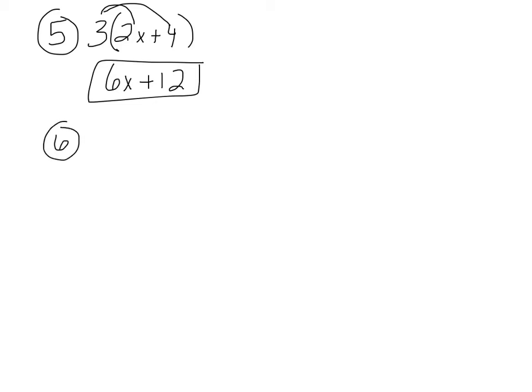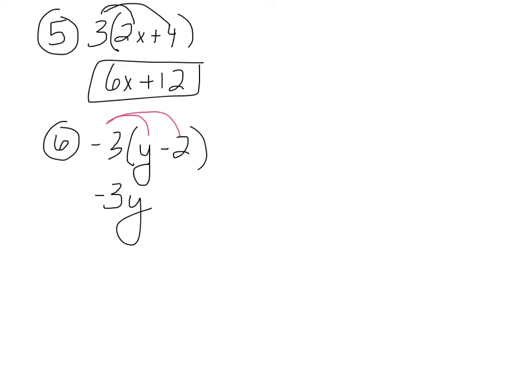Next example: negative 3 times the quantity y minus 2. Distribute the negative 3 to everything in the parentheses. Negative 3 times y is negative 3y. Negative 3 times negative 2 — a negative times a negative — is positive 6. So the answer is negative 3y plus 6.